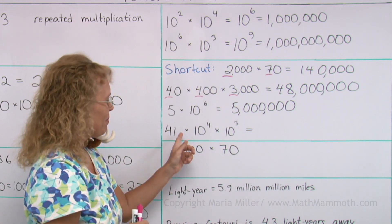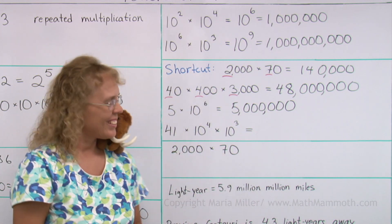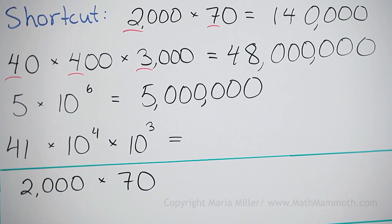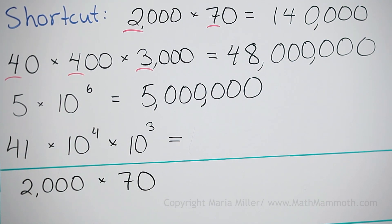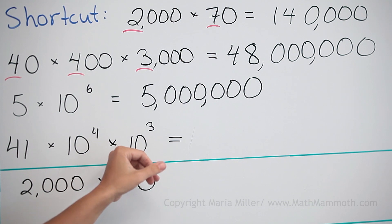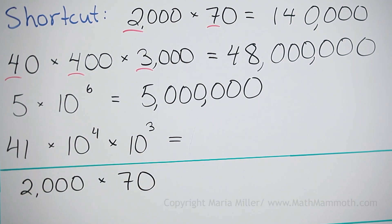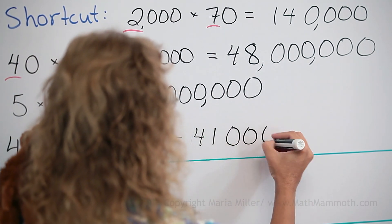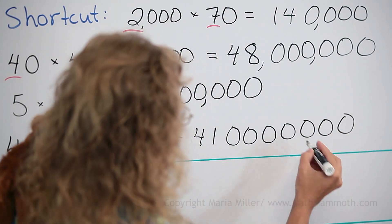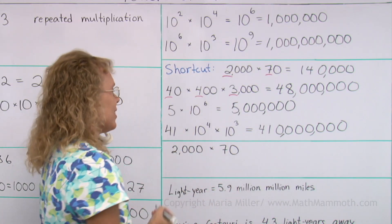One more: 41 times 10 to the fourth power times 10 to the third power. Multiplying by 10 to the fourth we tag four zeros, and multiplying by 1,000 we tag three more zeros. So I take 41 and write seven zeros total. The answer is 410 million.